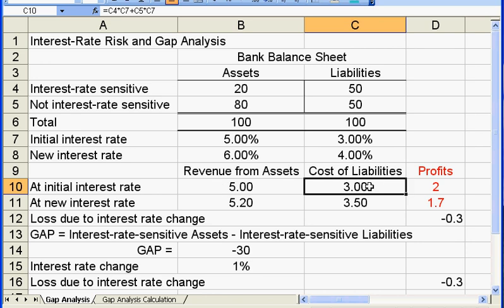On the cost side, at the initial interest rate, we have this same 3% times the $50 interest rate sensitive liability and the $50 interest rate insensitive liabilities. So we have $3 in cost, and the difference is the profit, that's $2.